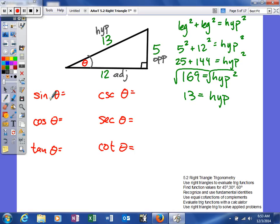The ratio for sine is opposite over hypotenuse, so 5/13. Cosine is adjacent over hypotenuse, which is 12/13. Tangent is opposite over adjacent, so 5/12.